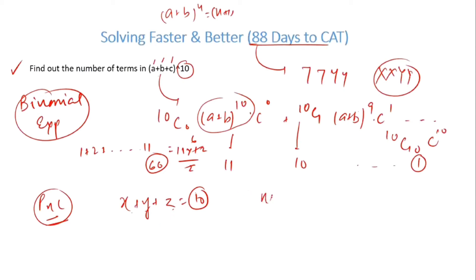How can we divide it? We can use basic P and C formula, which is n+r-1 C r-1, which we use for distribution problems. So now this is 10 + 3 - 1 C 3 - 1. This becomes 12C2, that is 12 times 11 by 2, which is 66.